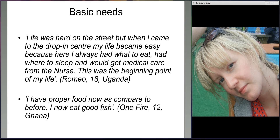During the stories, the children and young people spoke about many common themes and changes in their lives brought about through the support they received. All the names being used are names that the children came up with for themselves, not their real names. First of all, children talked about their basic needs being met — getting food, medical attention and having a roof over their heads. For example, Romeo in Uganda talked about how life was very hard on the streets, but when he came to the drop-in centre, he was able to eat, had somewhere to sleep, and could get medical care.